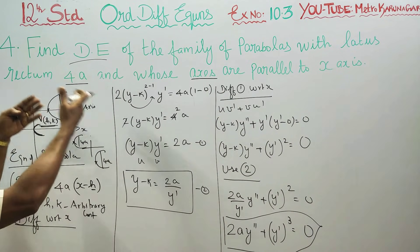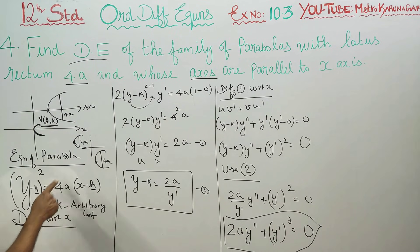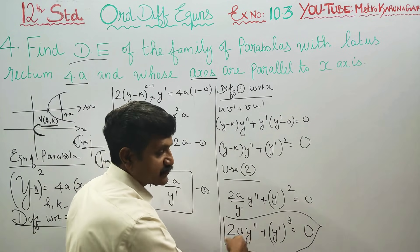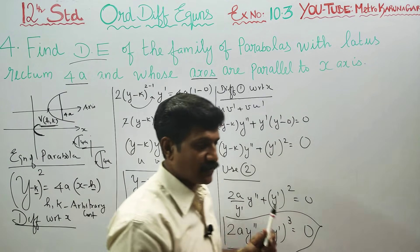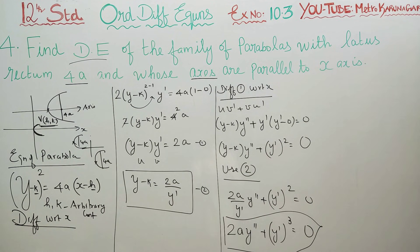For open left, the equation becomes y² = minus 4a times (x minus h), so the minus symbol cancels out and we get the same result: 2a times y-double-dash plus y-dash cubed equals 0. Open right and open left both give the same differential equation with axis parallel to the x-axis. Thank you.